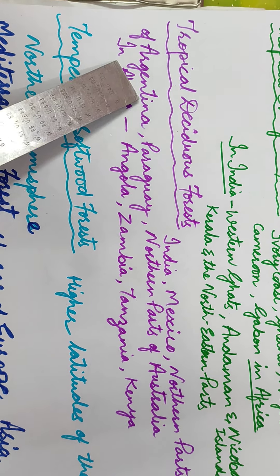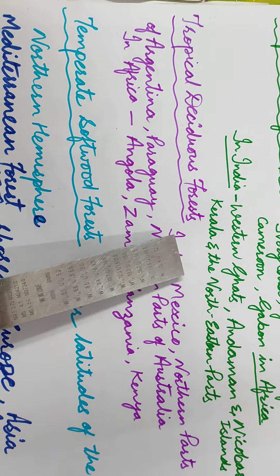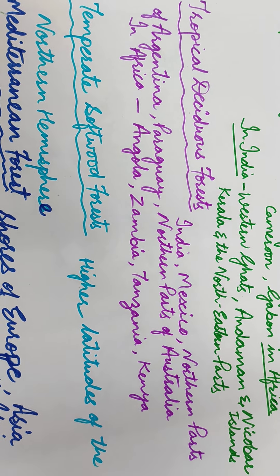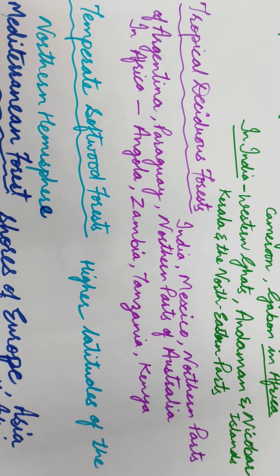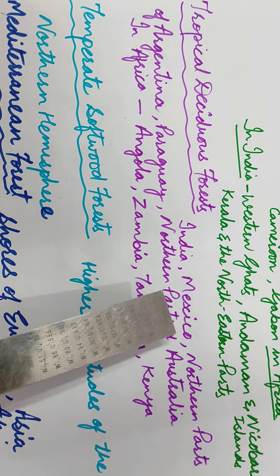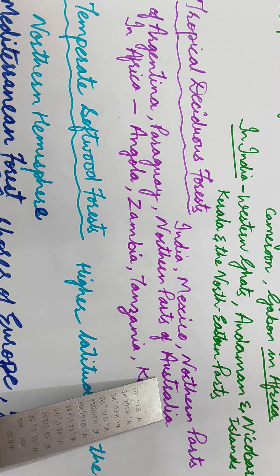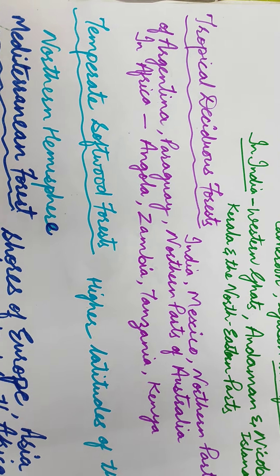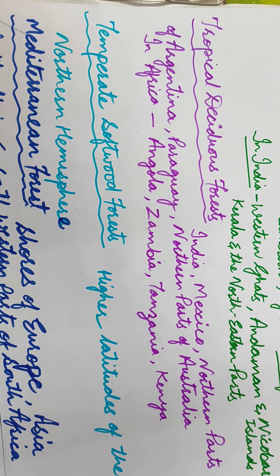Then we discussed tropical desert forests. Main locations are in India, Mexico, northern part of Argentina, Paraguay, northern part of Australia, then we discussed in Africa: Angola, Zambia, Tanzania, Kenya.